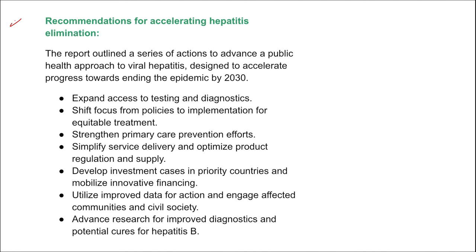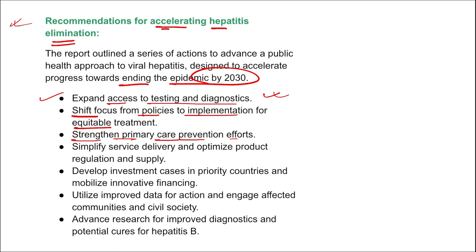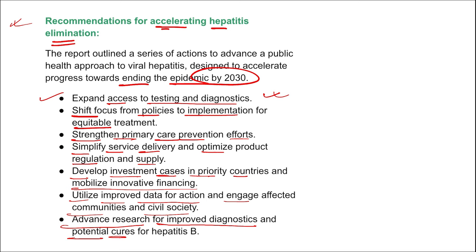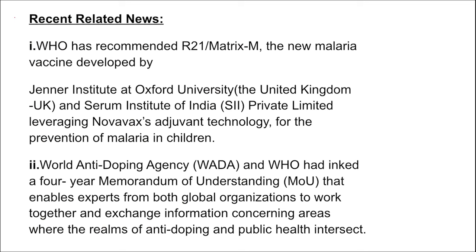Recommendations for accelerating hepatitis elimination — aiming to end the epidemic by 2030 — include: expanding access to testing and diagnosis, shifting focus from policies to implementation of equitable treatment, strengthening primary care prevention efforts, simplifying service delivery, optimizing product regulation and supply, developing investment cases in priority countries, mobilizing innovative funding, utilizing improved data for action, engaging affected communities and civil society, and advancing research for improved diagnostics and potential cures for Hepatitis B.